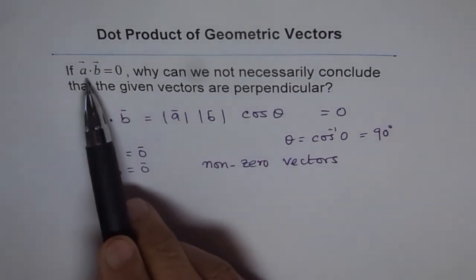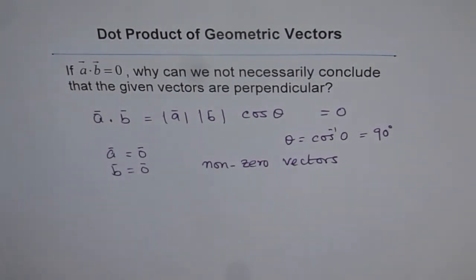If A and B are non-zero vectors, then A dot B equals to 0 implies, or from there you can conclude, that they are perpendicular vectors. Otherwise, not.